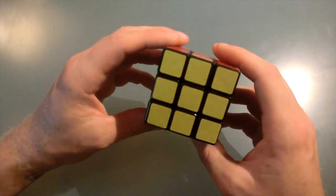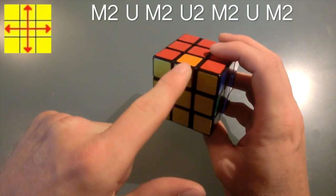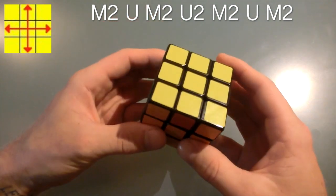Okay, this next algorithm is called an H perm. And what it does is it kind of does a cross, it switches this front edge with the back edge and the right edge with the side with the left edge and it looks like this.